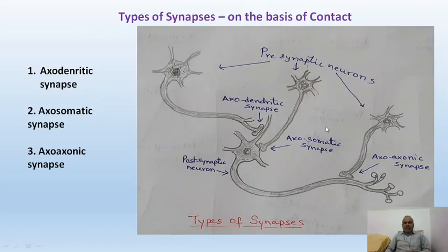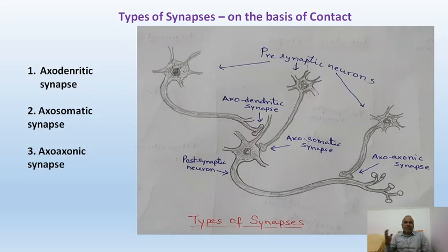Let us see the types of synapses. Synapses can be categorized on two particular bases. On the basis of contact they are classified into three types, and on the basis of functioning they are also classified into three types. Let us first understand the different types of synapses on the basis of their contact.